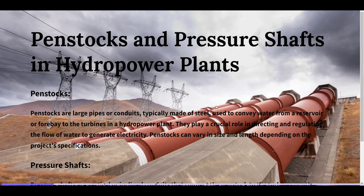Let's start with penstocks and pressure shafts in hydropower plants. Penstocks are large pipes or conduits, typically made of steel, used to convey water from a reservoir or forebay to the turbines in a hydropower plant. They play a crucial role in directing and regulating the flow of water to generate electricity. Penstocks can vary in size and length depending on the project's specifications.